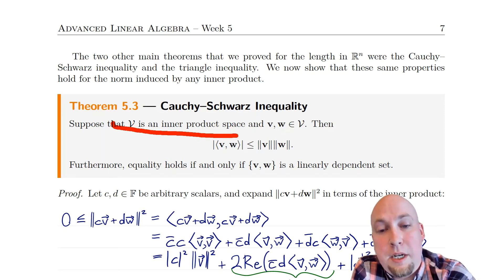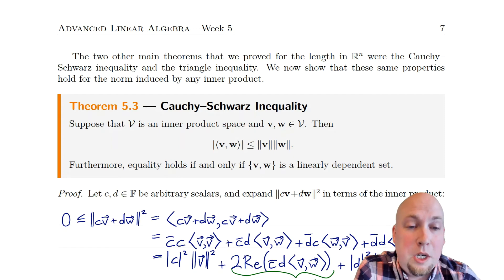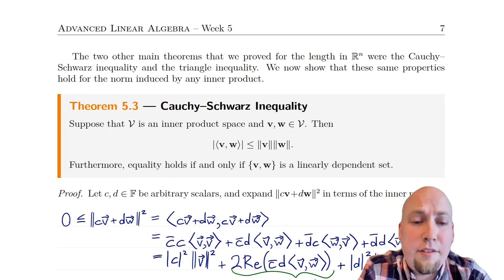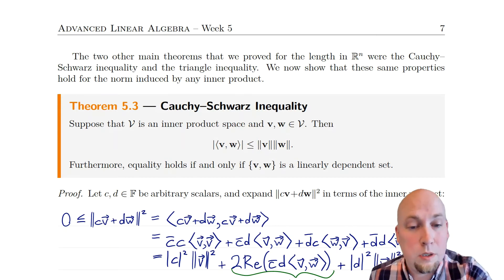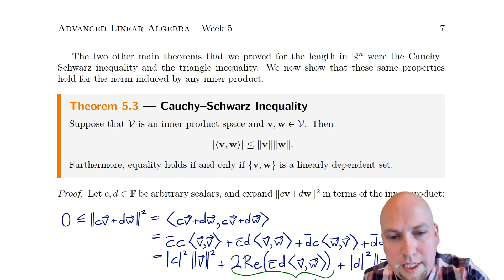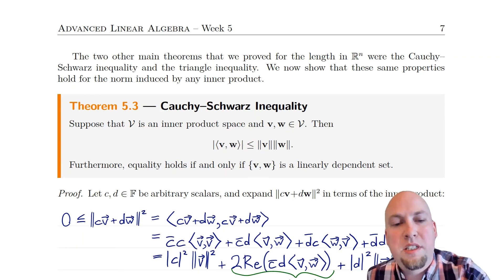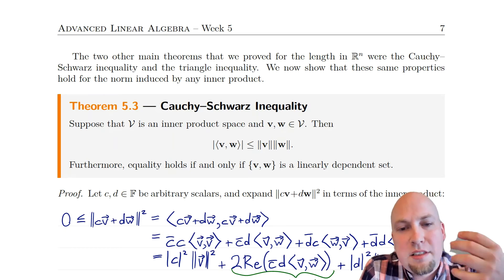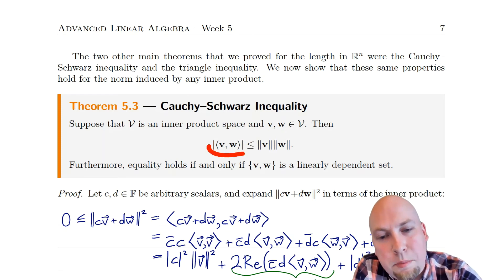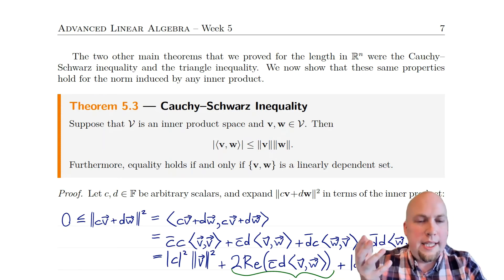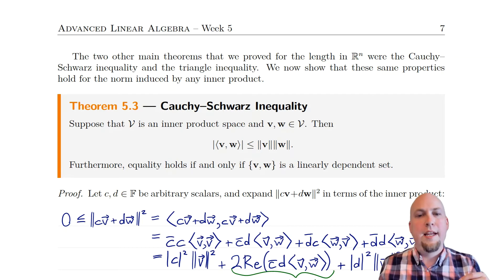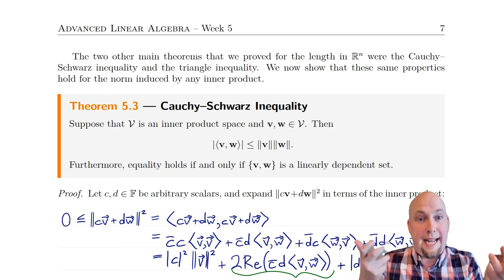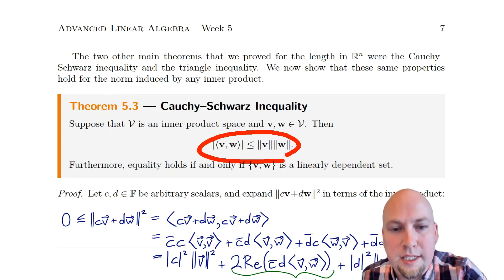Suppose you've got an inner product space and some vectors in that vector space. Then the absolute value of the inner product of those two vectors is never bigger than the product of their two norms, where these norms are the norms induced by the inner product. Furthermore, the only way you ever get equality is if V and W form a linearly dependent set — in other words, if they're multiples of each other, or one of them is the zero vector.